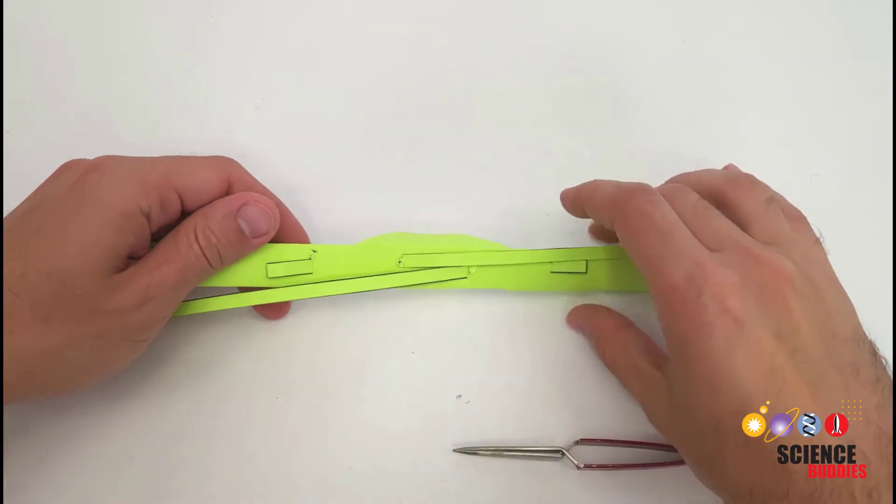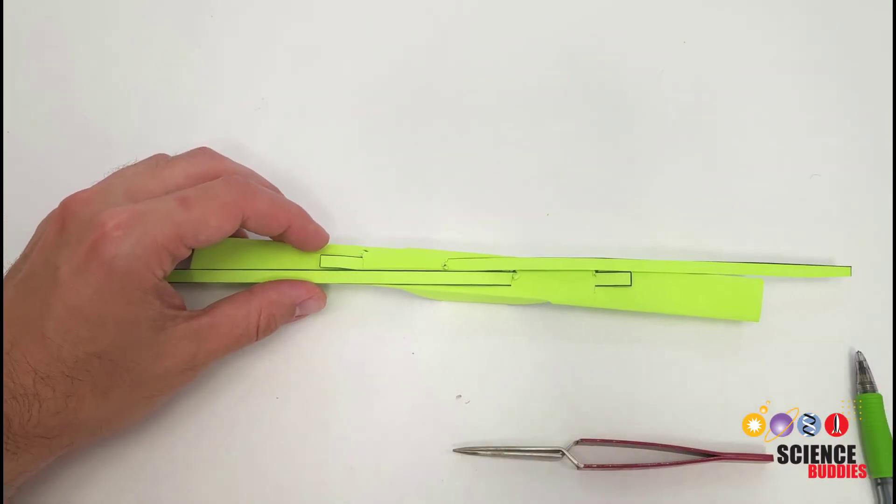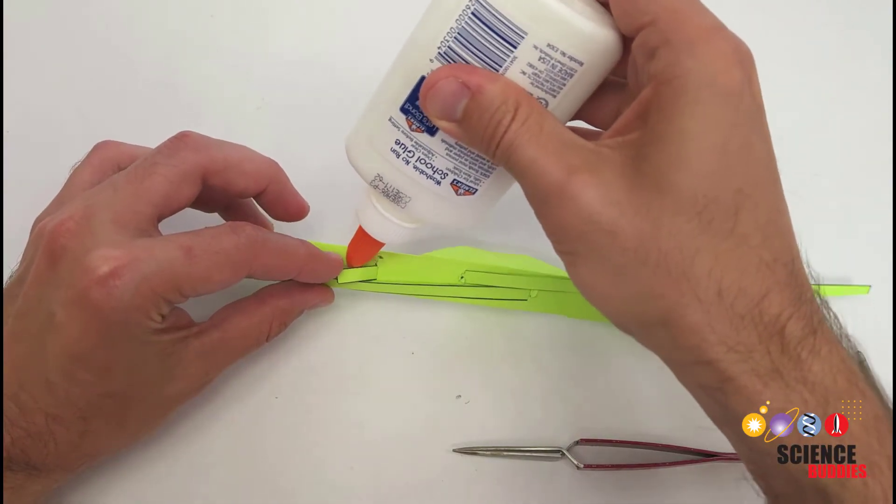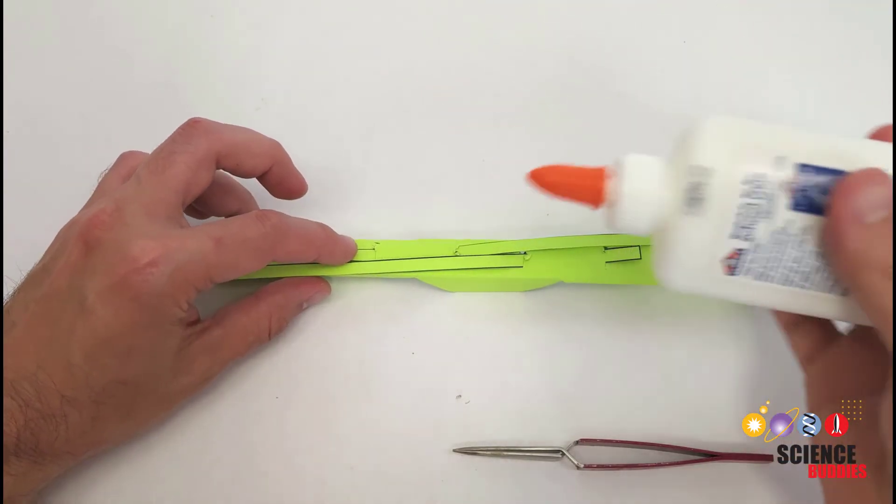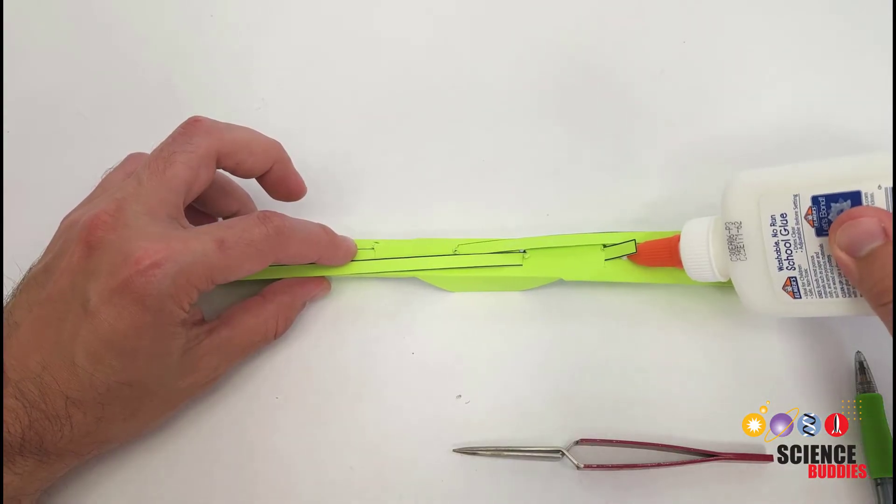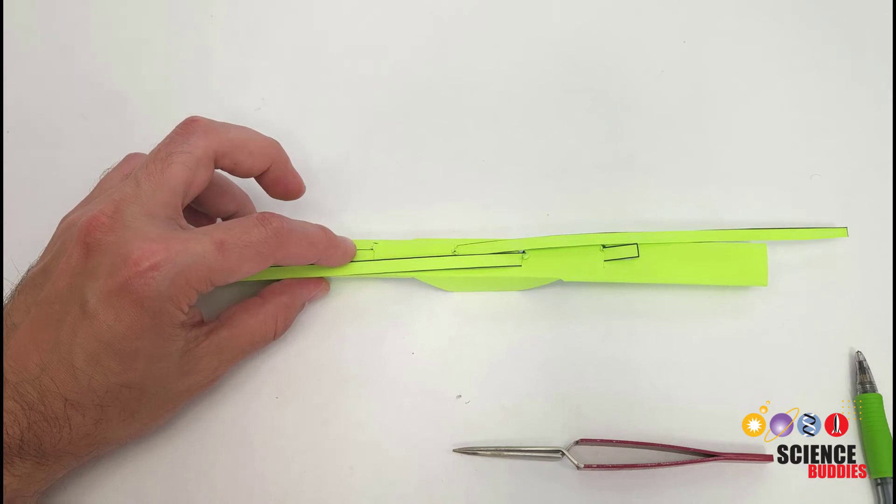Once all of that glue has dried and your gripper will hold its shape, you want to flip it over and glue the short parts of the tendons that are sticking through to the back of the gripper. Make sure you hold these in place until the glue is dry completely, so you can pull on the tendons and they will not come loose.